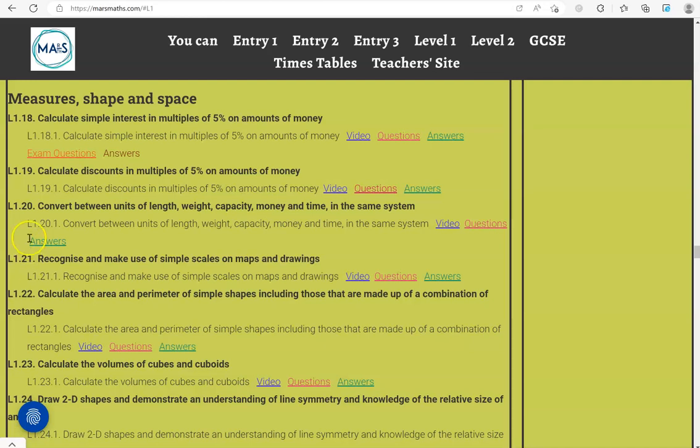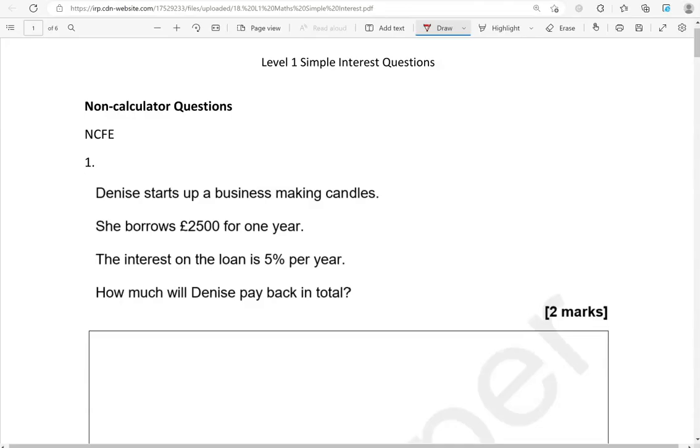In this video we'll go through exam questions that cover the criteria, calculate simple interest in multiples of 5% on amounts of money. You can locate the questions on the MassMath.com website under level 1. The questions come from different exam boards. We'll start with the non-calculator questions and then move to the calculator questions.